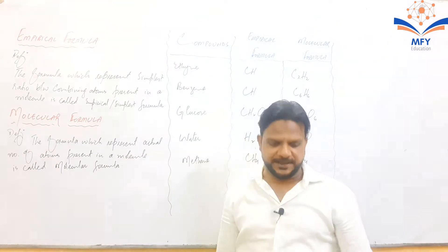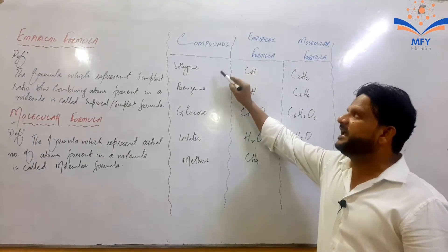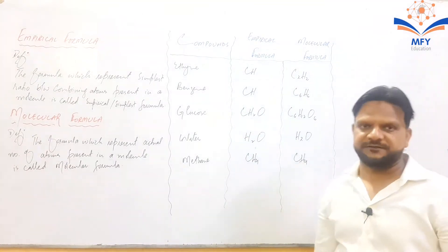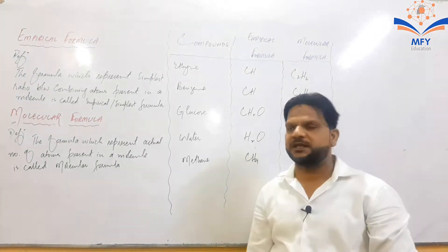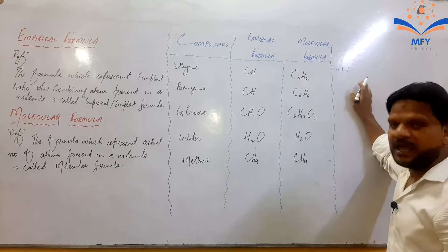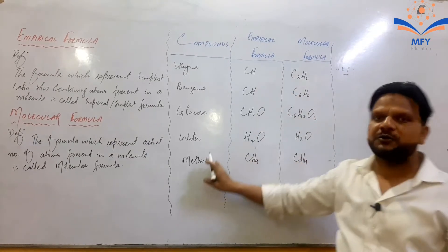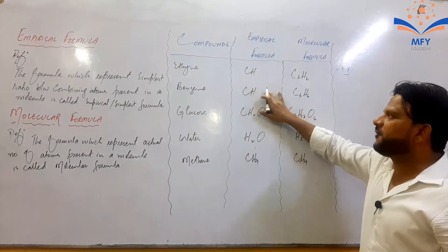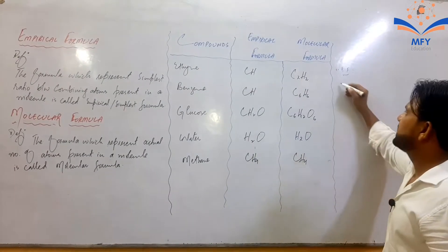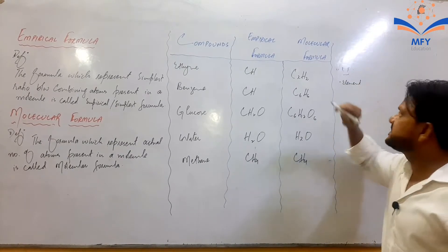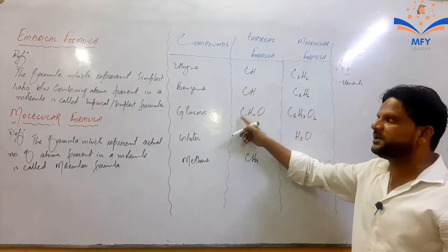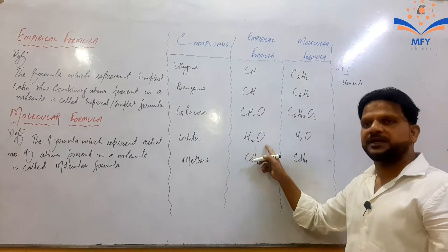اب اس کو explain کرتے ہیں کہ empirical اور molecular formula کے درمیان difference کیا ہے۔ کچھ examples لکھی ہوئی ہیں — compounds کے نام: ایتھائین، بینزین، گلوکوز، واٹر، میتھین — ان کے empirical اور molecular formula لکھے ہوئے ہیں۔ تو ہم دیکھتے ہیں کہ empirical formula ہمیں کیا information دیتا ہے۔ پہلی information یہ ہے کہ کسی بھی compound میں کون کون سے elements present ہیں — ایتھائین میں carbon اور hydrogen، بینزین میں carbon اور hydrogen، گلوکوز میں carbon، hydrogen اور oxygen، water میں hydrogen اور oxygen، methane میں carbon اور hydrogen۔